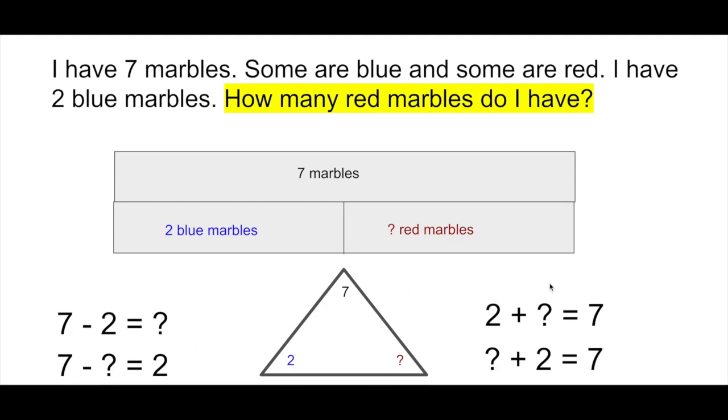Think of them as flip-flops. You could solve 2 + ? = 7. Or you could solve ? + 2 = 7. Kind of the same with the subtracting. 7 - 2 = ?. But 7 - ? = 2. They all work because they're in that same family.